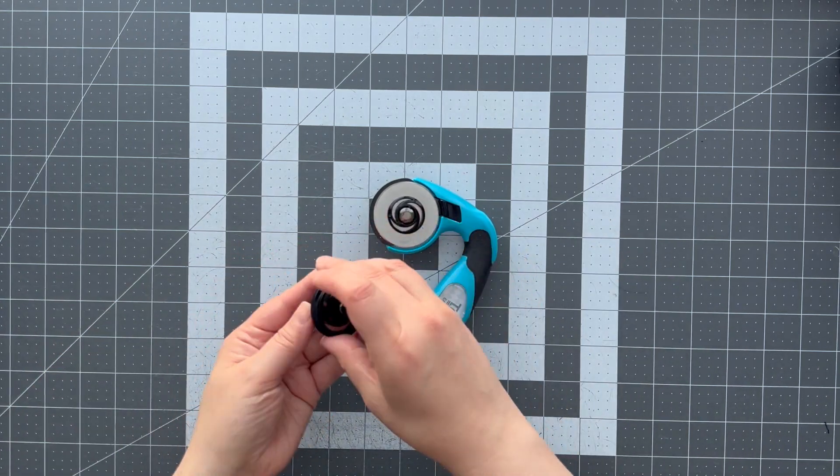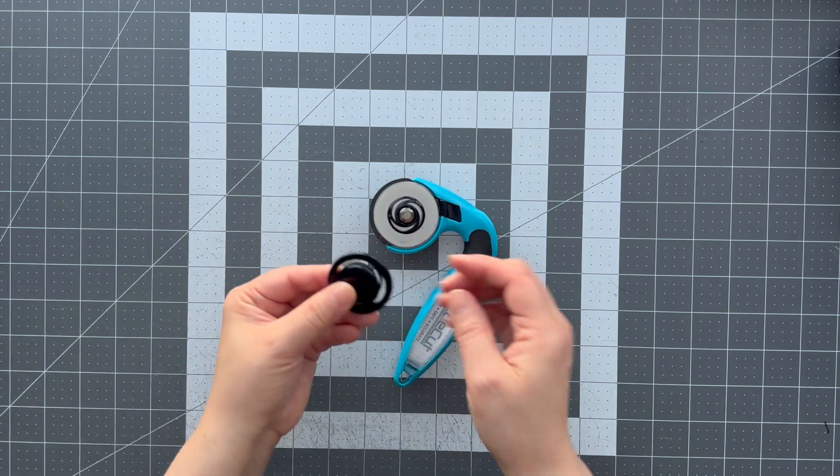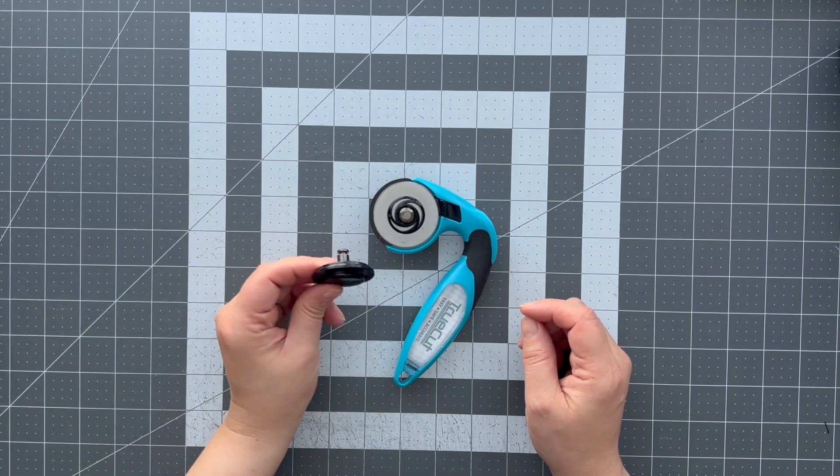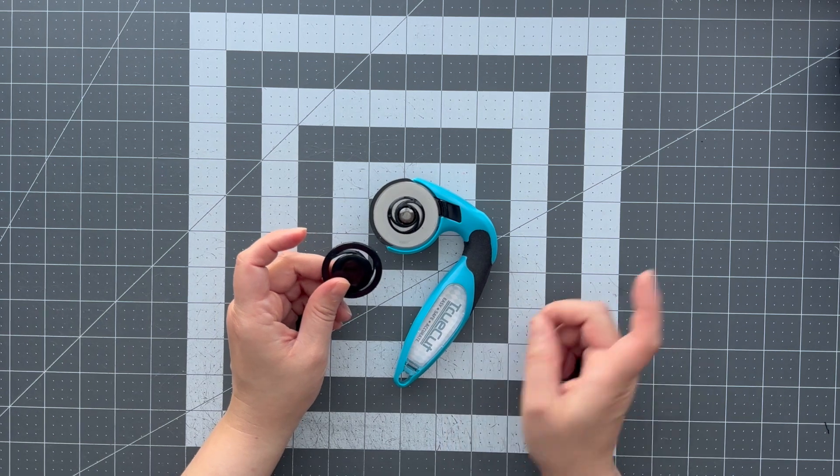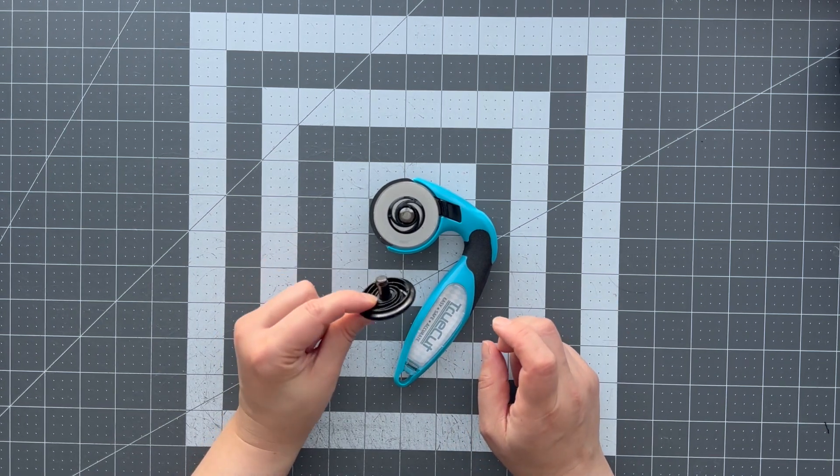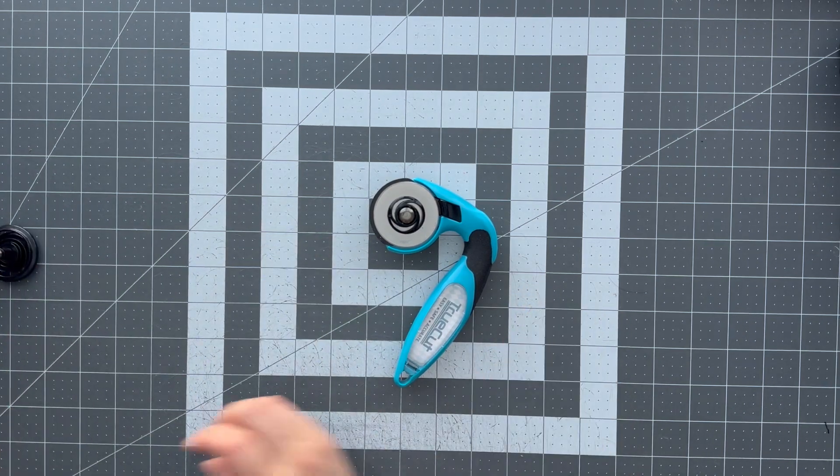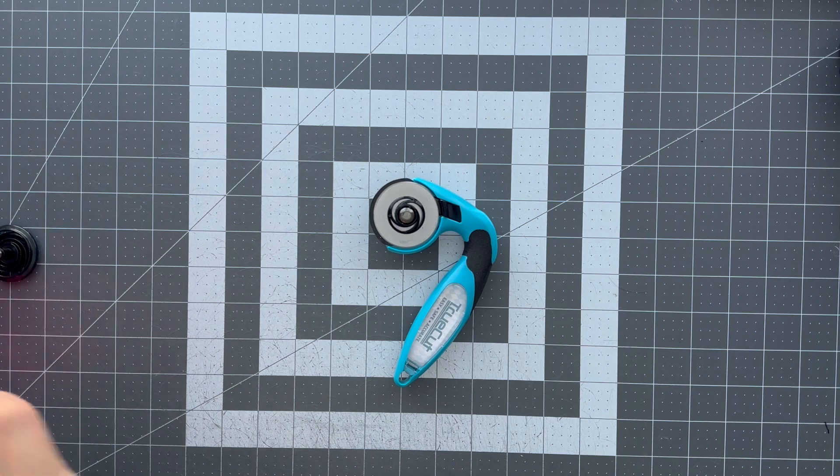It also comes with these two pieces. There is this little black piece and a pin. So this is actually a ruler guard and I'll show you what that does because I didn't realize that it had that and I'm very excited. I'm probably never going to take this off of this cutter.